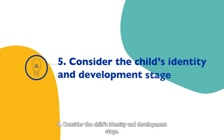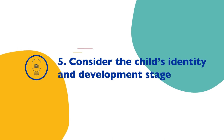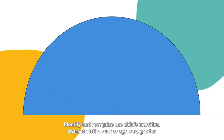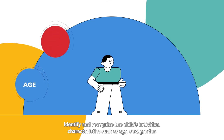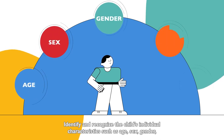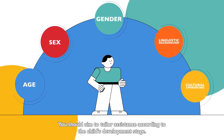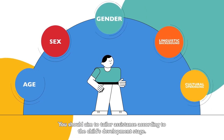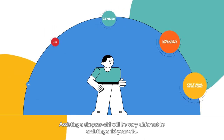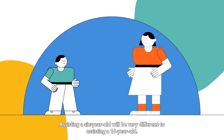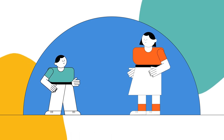5. Consider the child's identity and development stage. Identify and recognise the child's individual characteristics, such as age, sex, gender, linguistic background and cultural upbringing. You should aim to tailor assistance according to the child's development stage. Assisting a 6-year-old will be very different to assisting a 16-year-old.